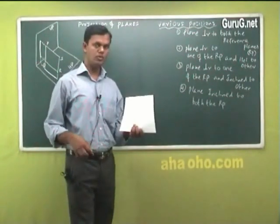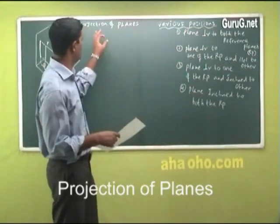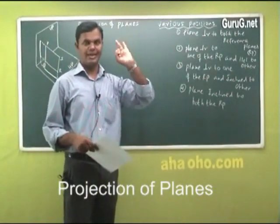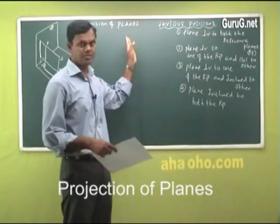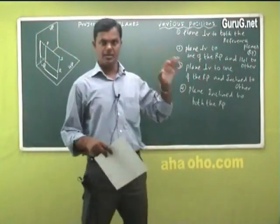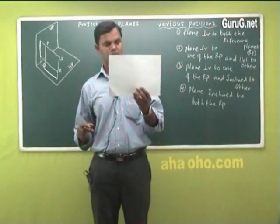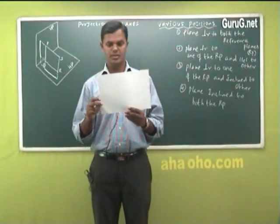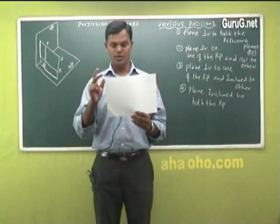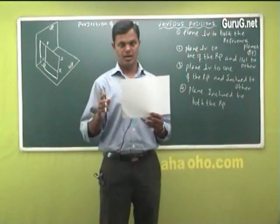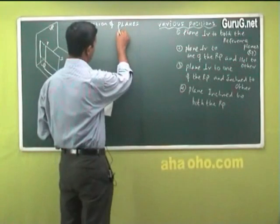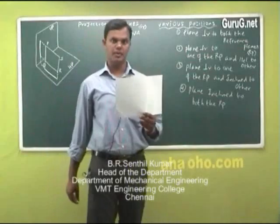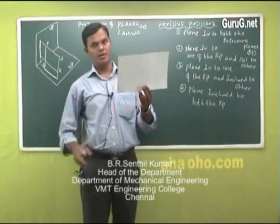Now we move on to the topic of projection of planes. We have seen points first, then projection of lines. Now projection of planes. A plane — just consider a sheet of paper as a plane, without thickness. It is very important. You can name it as a lamina. So lamina or plane are both the same.